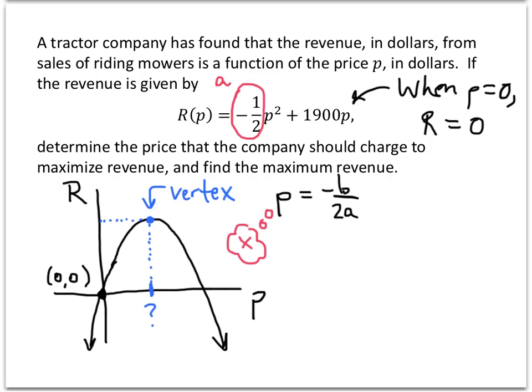Okay, so for our quadratic function here, we already know that a is negative one-half. b is going to be 1,900. And so if we just plug those into our formula for the vertex, we get negative 1,900 divided by 2 times a, which is negative one-half. And that works out to be positive 1,900.